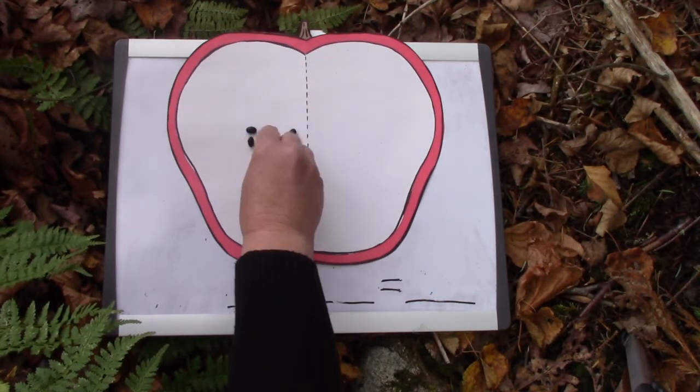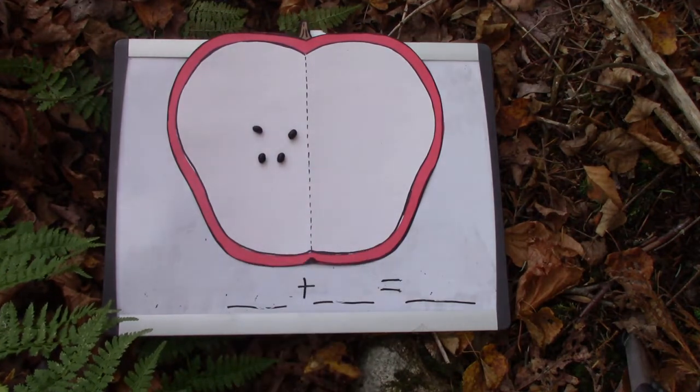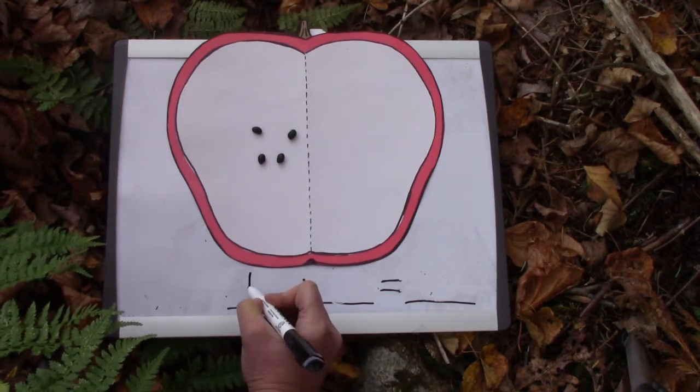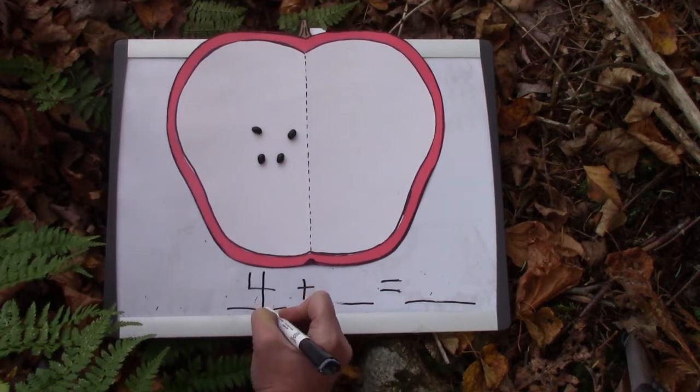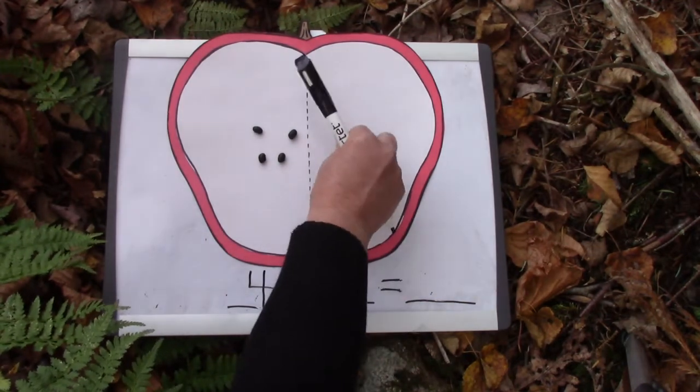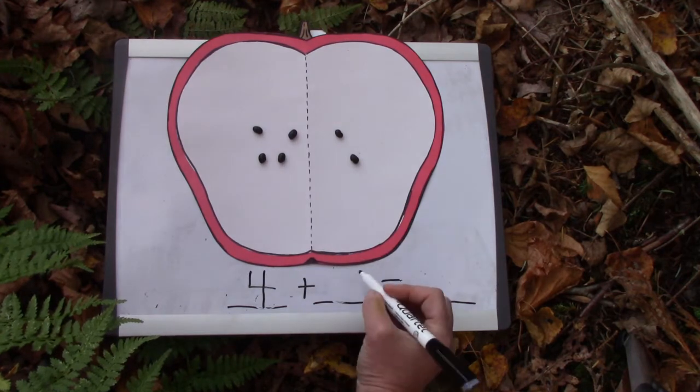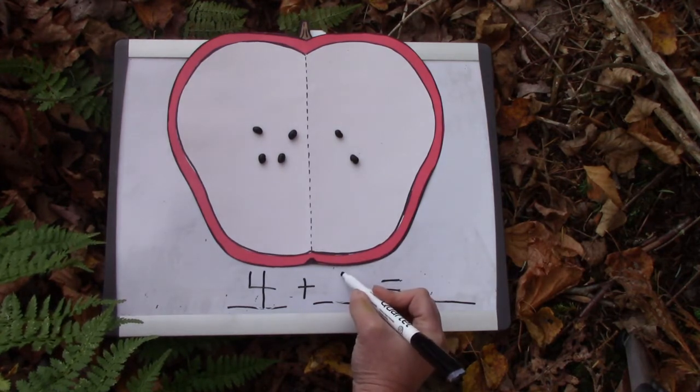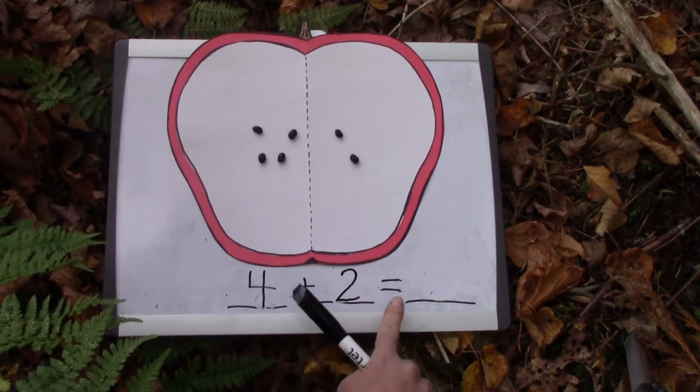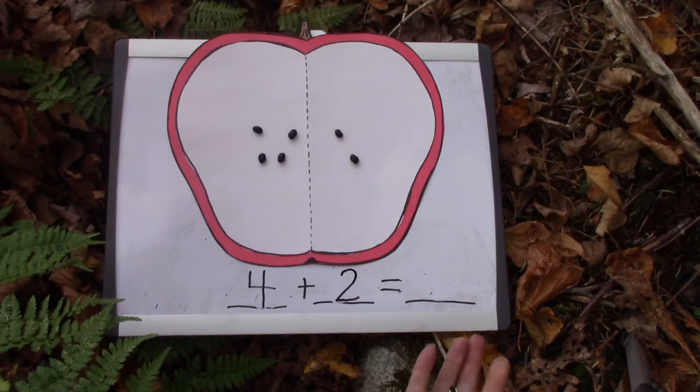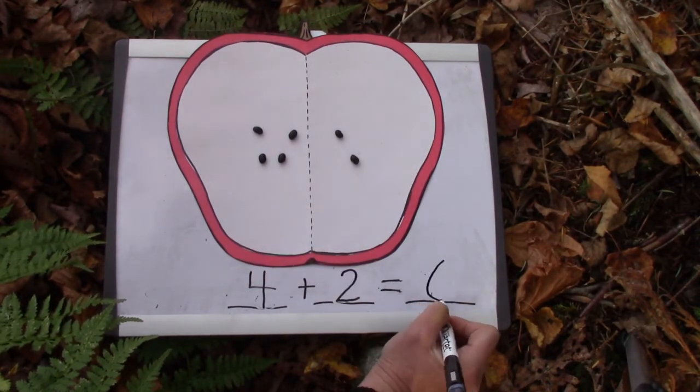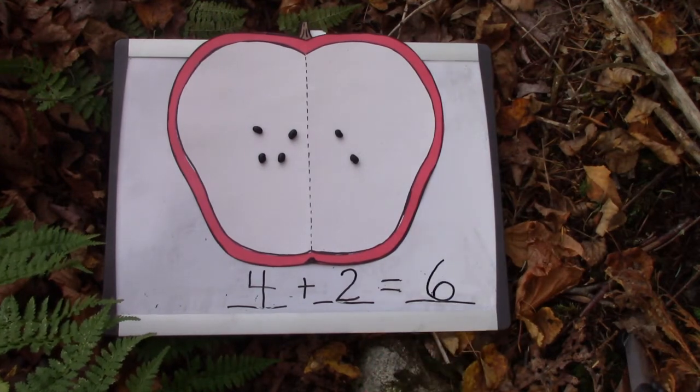I'm going to put four apple seeds on this side. If I have four apple seeds, what number should I write on my number sentence? You're right! It's the number four. Four plus... and I'm going to put down two. I have two on this side. What number am I going to put here? Of course, you're right! It's the number two. Four plus two equals... well, how many? Four, five, six. Four plus two equals six.